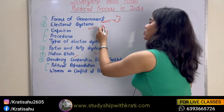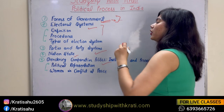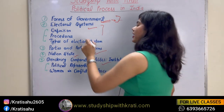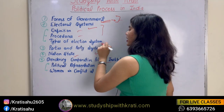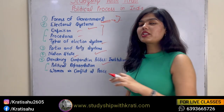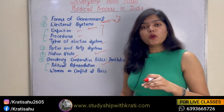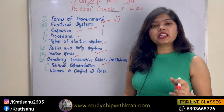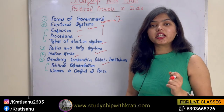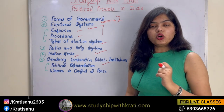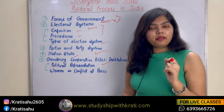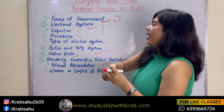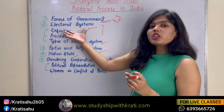Going for the second unit: Electoral System. This chapter is pretty easy — definition, procedure, types of election system. You may already know this chapter from Class 11 — it's directly or indirectly related to what you've studied before about the electoral system.